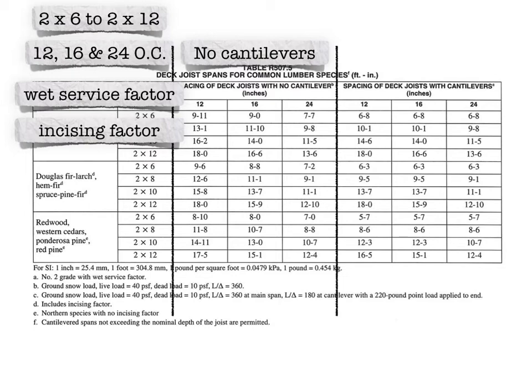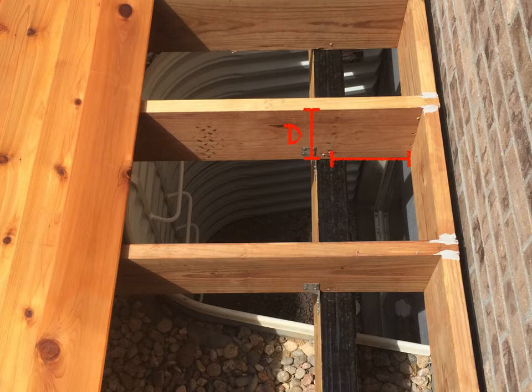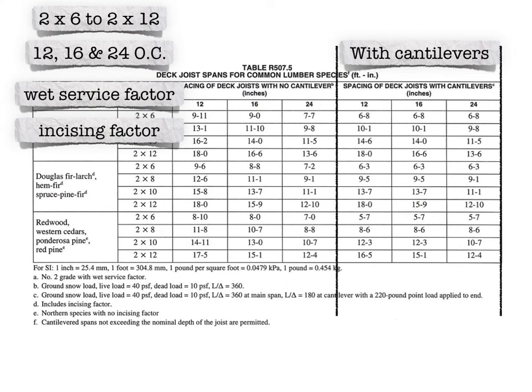However, there is one caveat. When looking at joists cantilevering beyond the beam, if they don't cantilever more than the depth of the joist — so for a 2x10, that's around 9.25 inches — as long as it doesn't cantilever more than 9.25 inches past the center of bearing on the beam, then you can use the no-cantilever portion of the table.